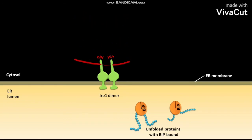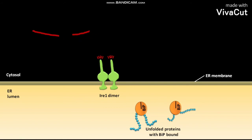The cytosolic unspliced HSC1 mRNA binds to the activated RNA endonucleases of the IRE1 dimer. The activated RNA endonuclease then cleaves the unspliced HSC1 mRNA. The resulting HSC1 mRNA fragments leave the active RNA endonuclease site and are considered as exon 1 and exon 2.